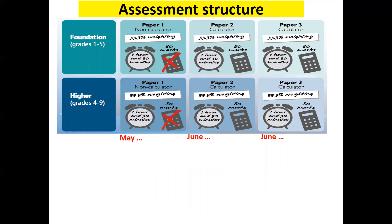As you can see, there are three papers. The first paper for both Higher and Foundation is non-calculator, and then the second and third papers are calculator. They're an hour and 30 minutes each and all worth 80 marks, so they all have an equal weighting. In Foundation you can achieve anything from a grade 1 to a grade 5, and in Higher it starts at a grade 4 and goes all the way to grade 9, which is the highest possible grade. A grade 4 is the ideal passing grade to achieve at the end to pass Mathematics.